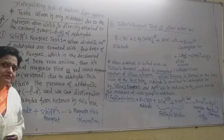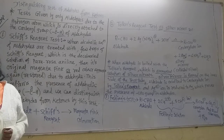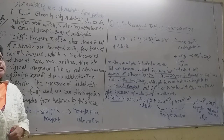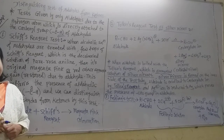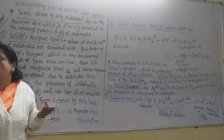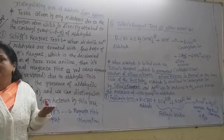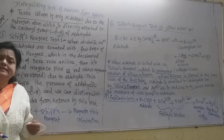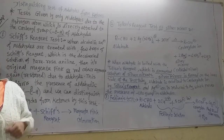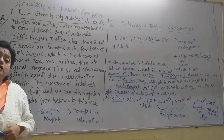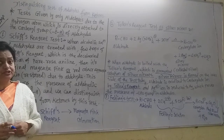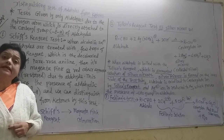Aldehydes themselves get oxidized. If aldehydes reduce another substance, they themselves get oxidized. The oxidation of aldehydes forms carboxylic acids. Both aldehydes and ketones on oxidation form carboxylic acids. Let us see how aldehydes reduce other substances and how they themselves get oxidized.